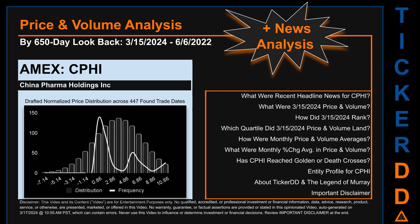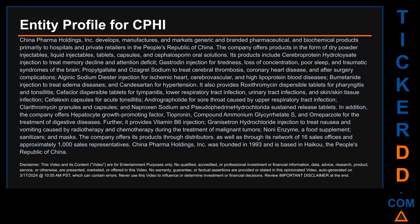Before we jump into price and volume analysis, let's look at recent headlines for CPHI. Hello, my name is Carl. I searched the public web to find information about the company behind this ticker. Here is what I found: China Pharma Holdings Inc. develops, manufactures, and markets generic and branded pharmaceutical and biochemical products, primarily to hospitals and private retailers in the People's Republic of China.